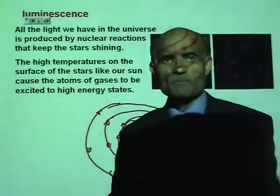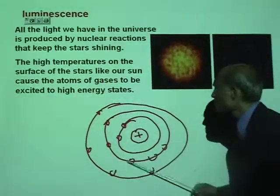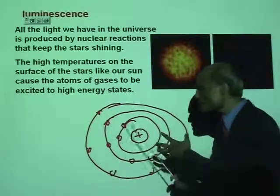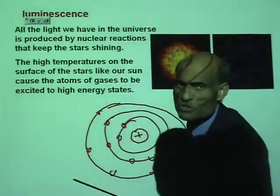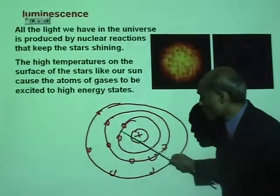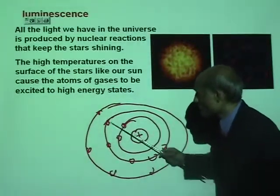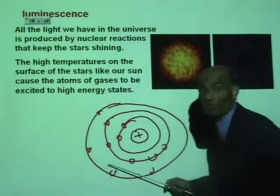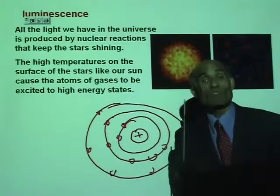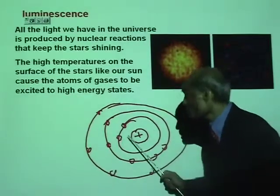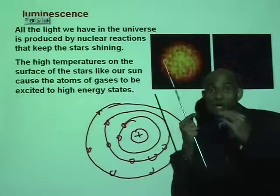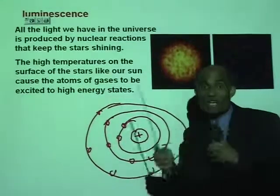Listen to this carefully. If this is a simple picture of the atom — which is not really a true picture, but at the moment this is good enough — what happens is the electrons are in various orbits. You know from your earlier discussions of energy that energy of an object is least when the objects are close together.